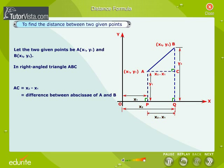AC is equal to x2 - x1, that is equal to the difference between abscissae of A and B. BC is equal to y2 - y1, that is equal to the difference between ordinates of A and B.